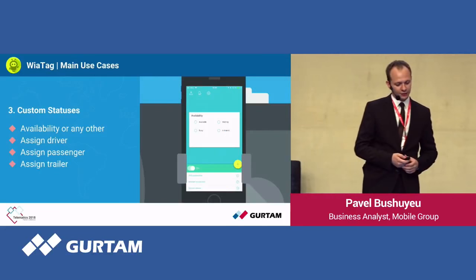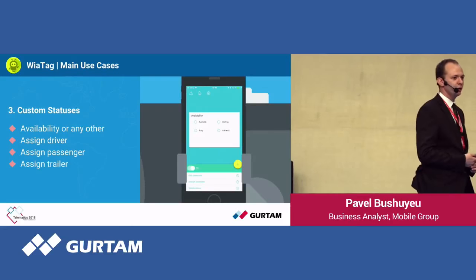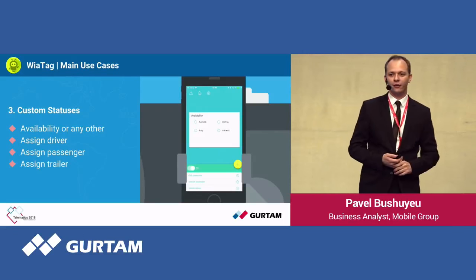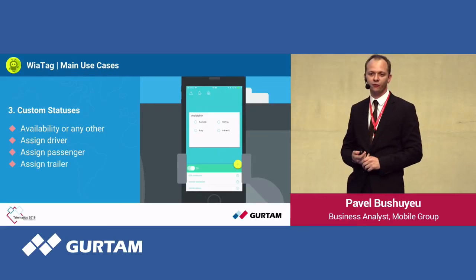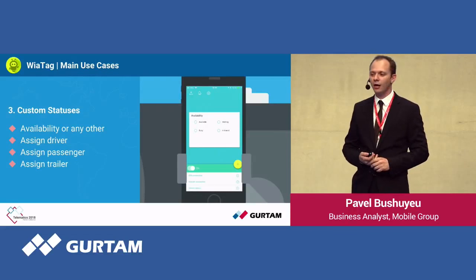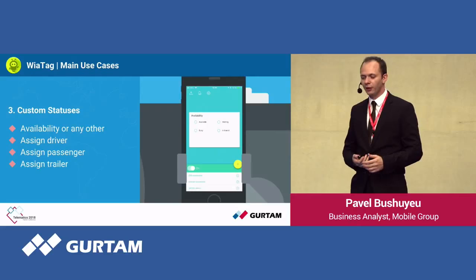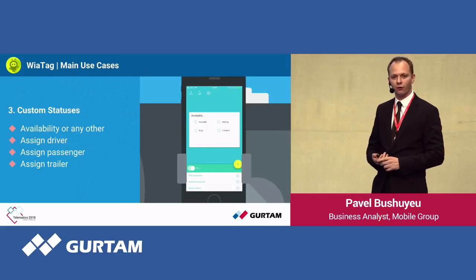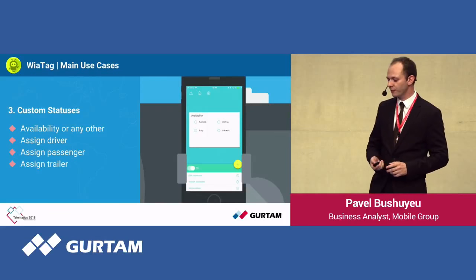Coming next to custom statuses — you may select availability or any other custom status that would make sense for your business. You may also not only do that, but also assign the driver, assign the passenger, or the trailer using the custom statuses.